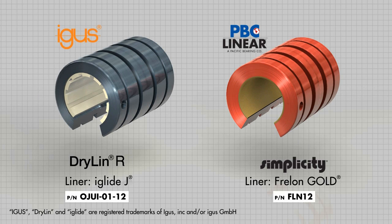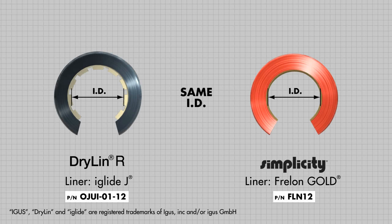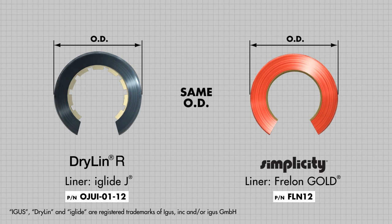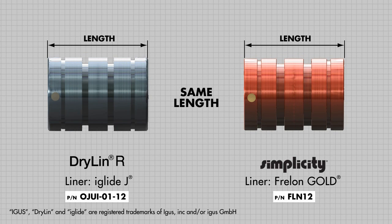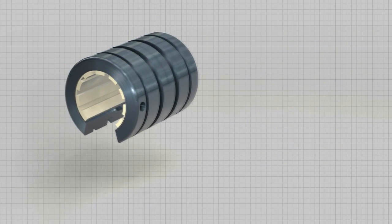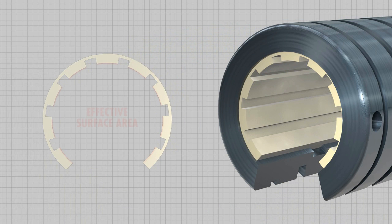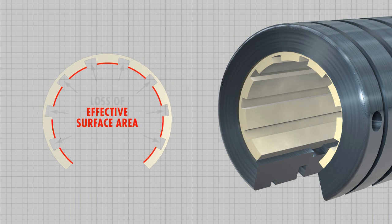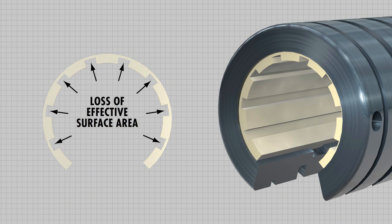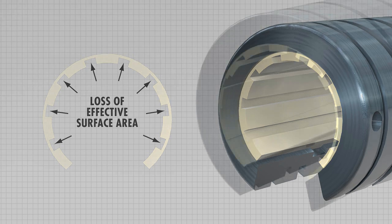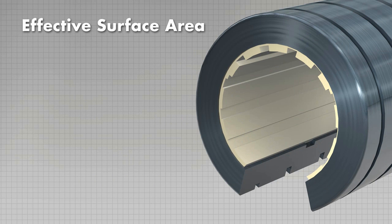Let's now look at the standard drylin R bearings and a standard simplicity bearing and compare the three primary dimensions: ID, OD, and length. Nominally all three have the same value and are size-interchangeable with standard ball bearings. However, the drylin R bearing does not have a complete surface area in contact with the shaft — each gap is a reduction in effective surface area, and each reduction in surface area is also a reduction in the dynamic performance capacity of the bearing.